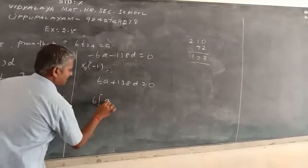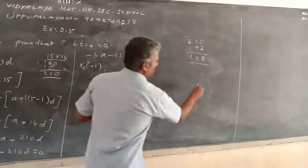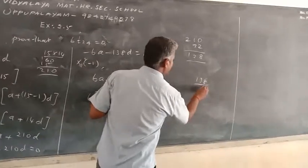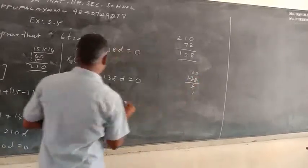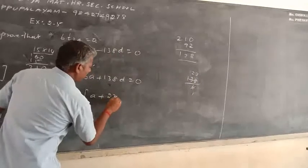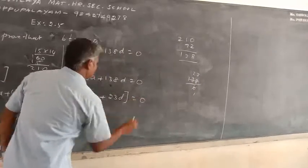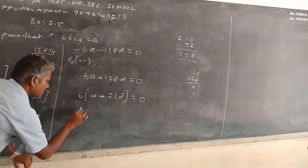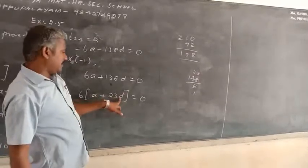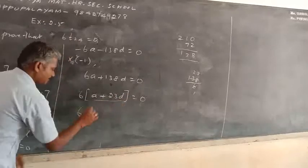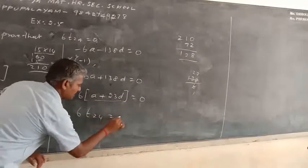6 common, A plus, so 138 divided by 6. 2, 2, 6 are 12, 3. So 23D is equal to 0. Now 6A plus 23D means T24 is equal to 0.